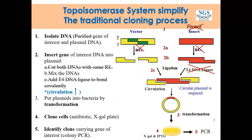This slide shows how the topoisomerase system simplifies the traditional cloning process. Most of the time with traditional cloning, we need purified DNA product. But if we use the topoisomerase system, no purification step is required — just your gene of interest mixed with the vector, without needing RE sites to cut both. Mix them together and ligation occurs due to the topo enzyme, a circular plasmid is formed, and then proceed directly to transformation, screening, and identifying clones by PCR.